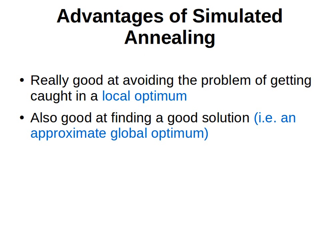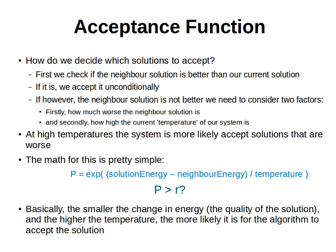We mentioned that we are going to jump out of a local minimum by accepting a worse solution — worse than the solution we currently have. How do we decide? First, we check if the neighboring solution is better than our current solution. If it is, we automatically and unconditionally accept it. If it's worse, then we have two factors to consider: how much worse the new solution is, and how high the current temperature of the system is.